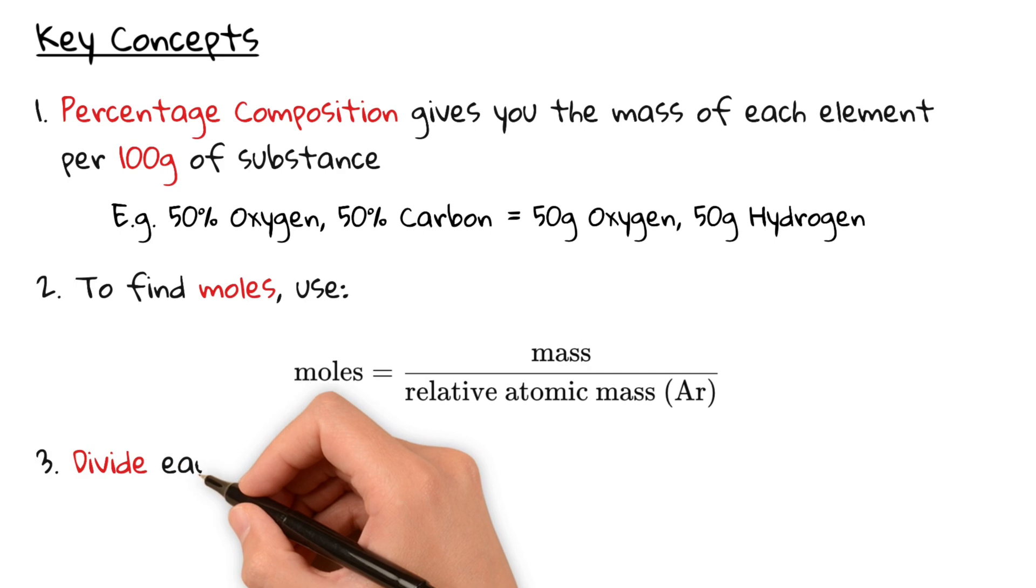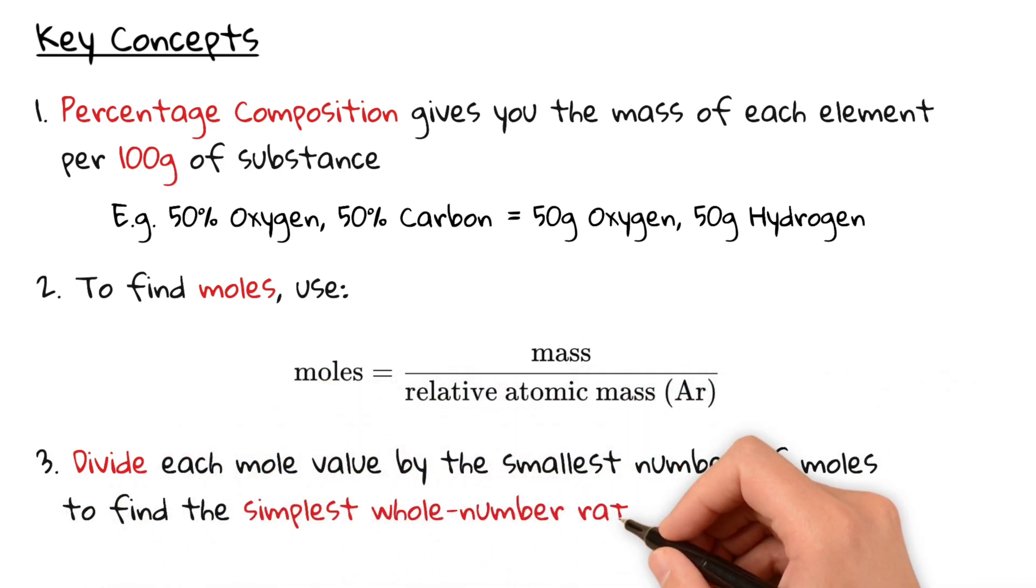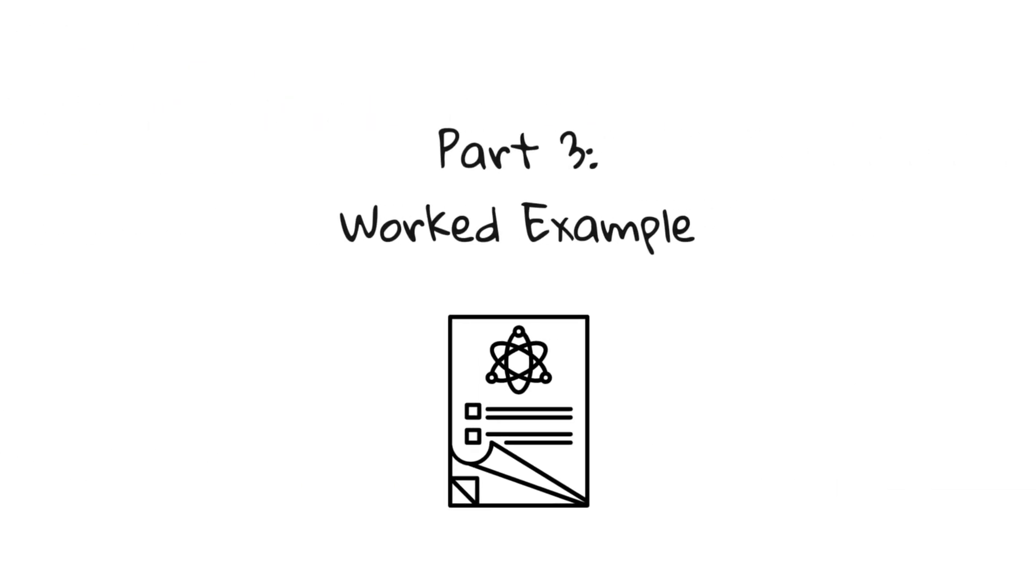And lastly, divide each mole value by the smallest number of moles to find the simplest whole number ratio. Sounds complicated? Don't worry, let's look at an example.